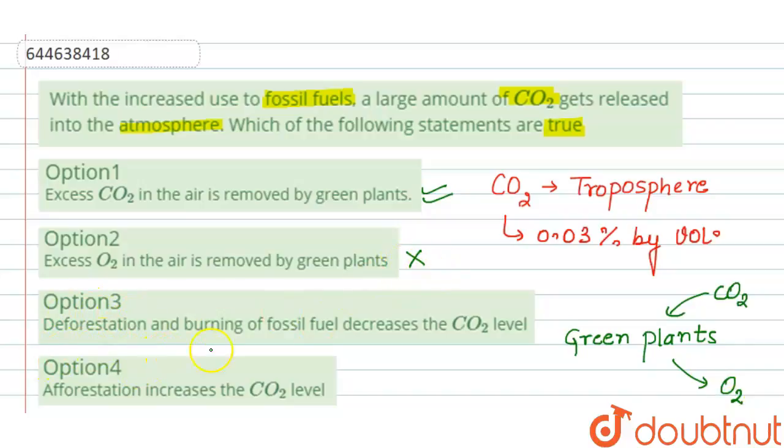Now the third one, that deforestation and burning of fossil fuel decreases the CO2 level. So it is incorrect because it increases the CO2 level and this increased CO2 level is responsible for global warming.